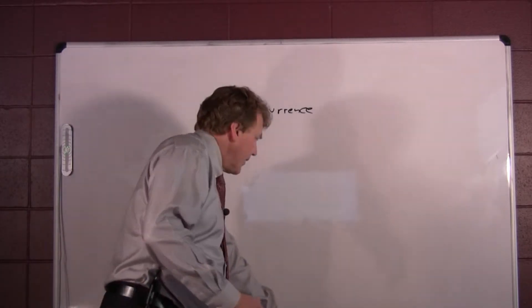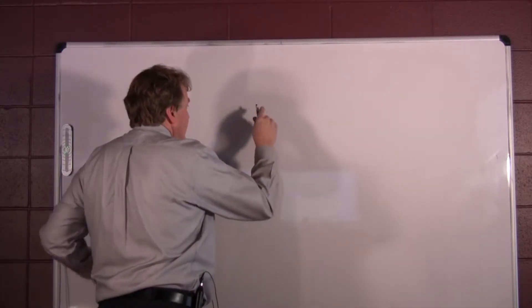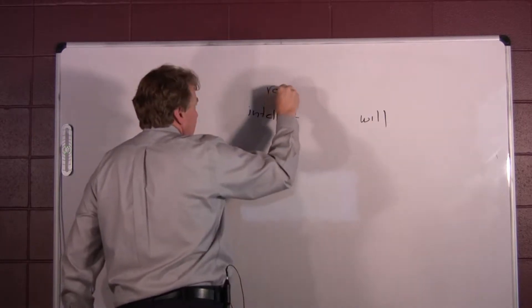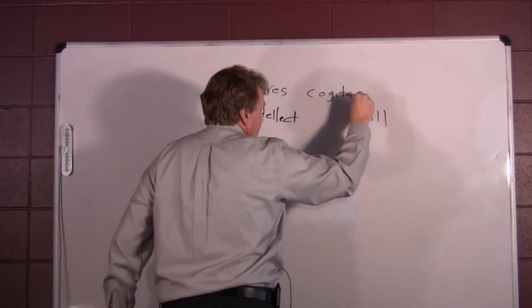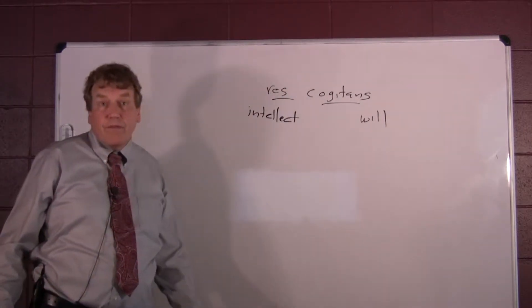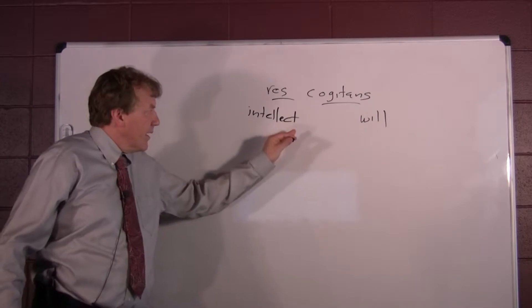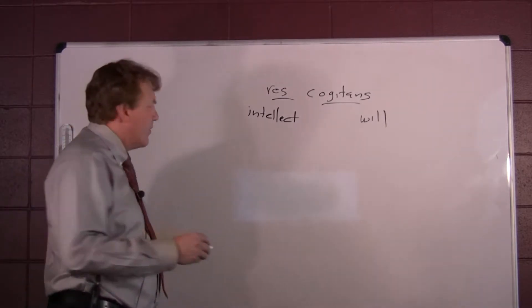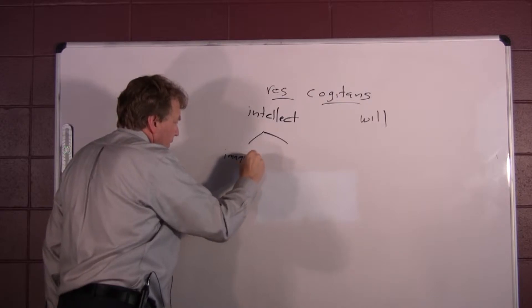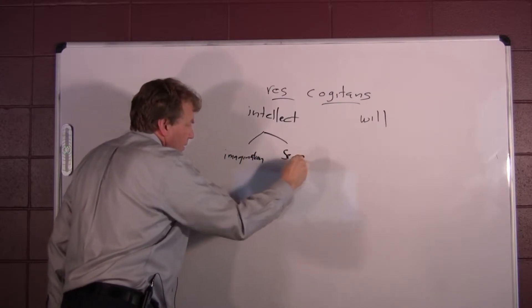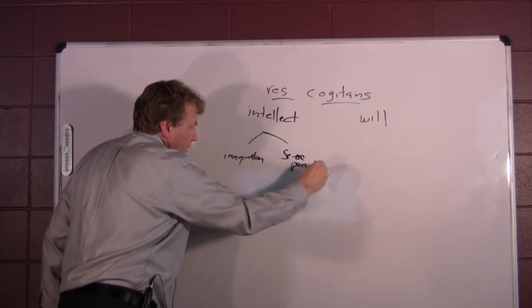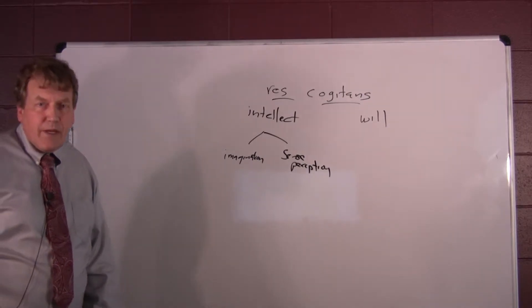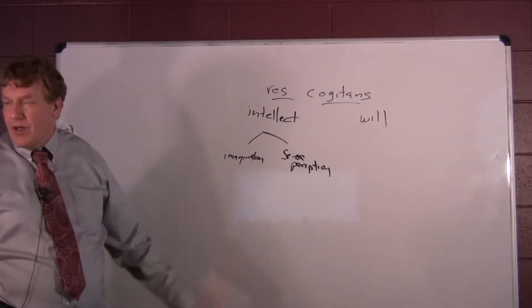So if we want to talk just a bit about the mind, the mind divides between intellect and will. This is the res cogitans, thinking thing. The thinking thing divides between intellectual acts of thinking and willing acts of thinking. And he divides now the intellect into imagination and sense perception. That's how that works. And the imagination and the sense perception, of course, they're dependent upon the notion of a body.